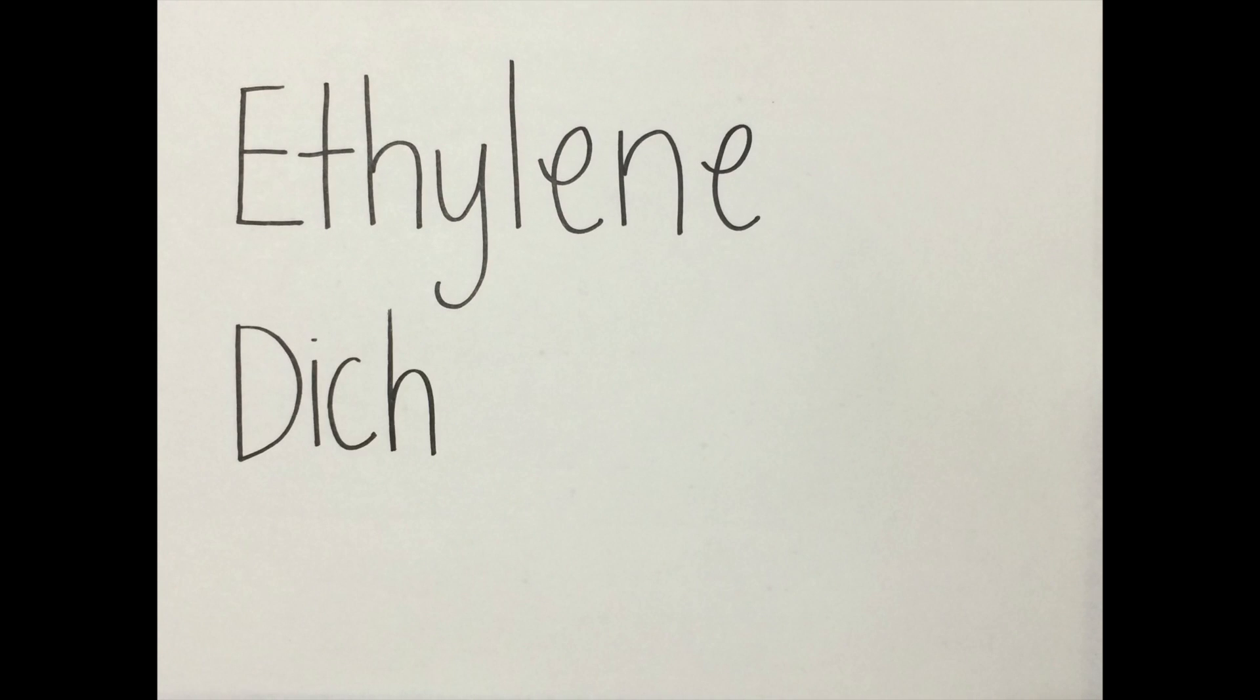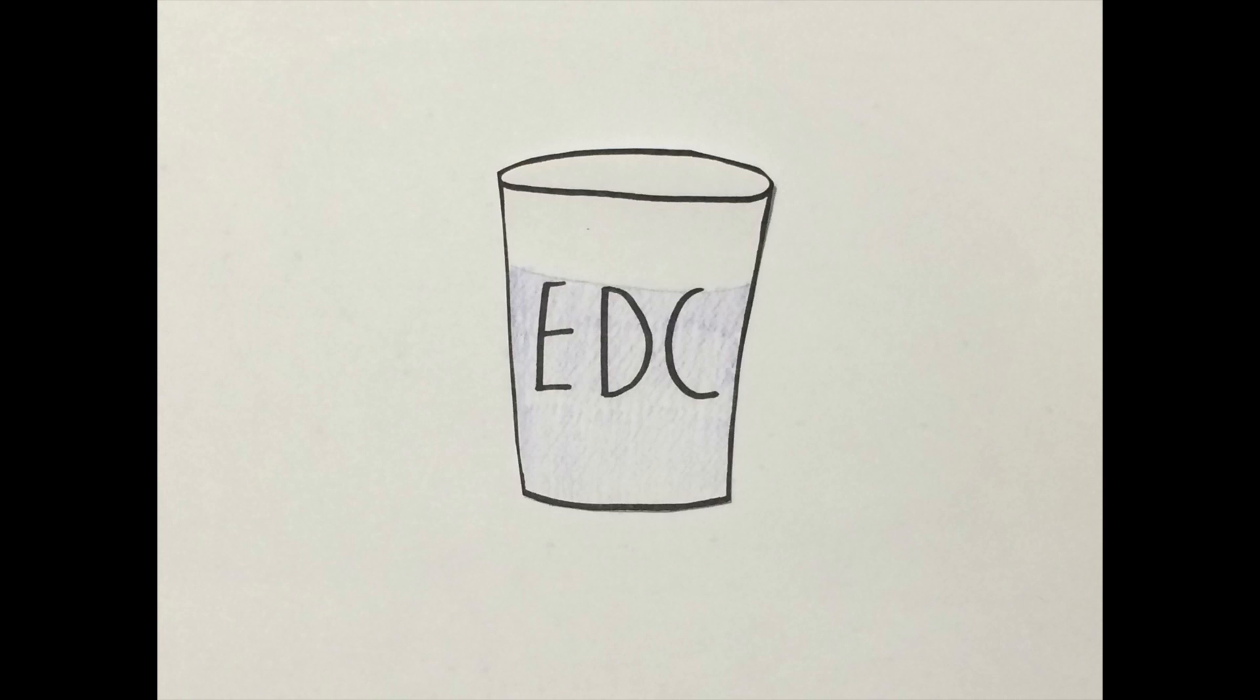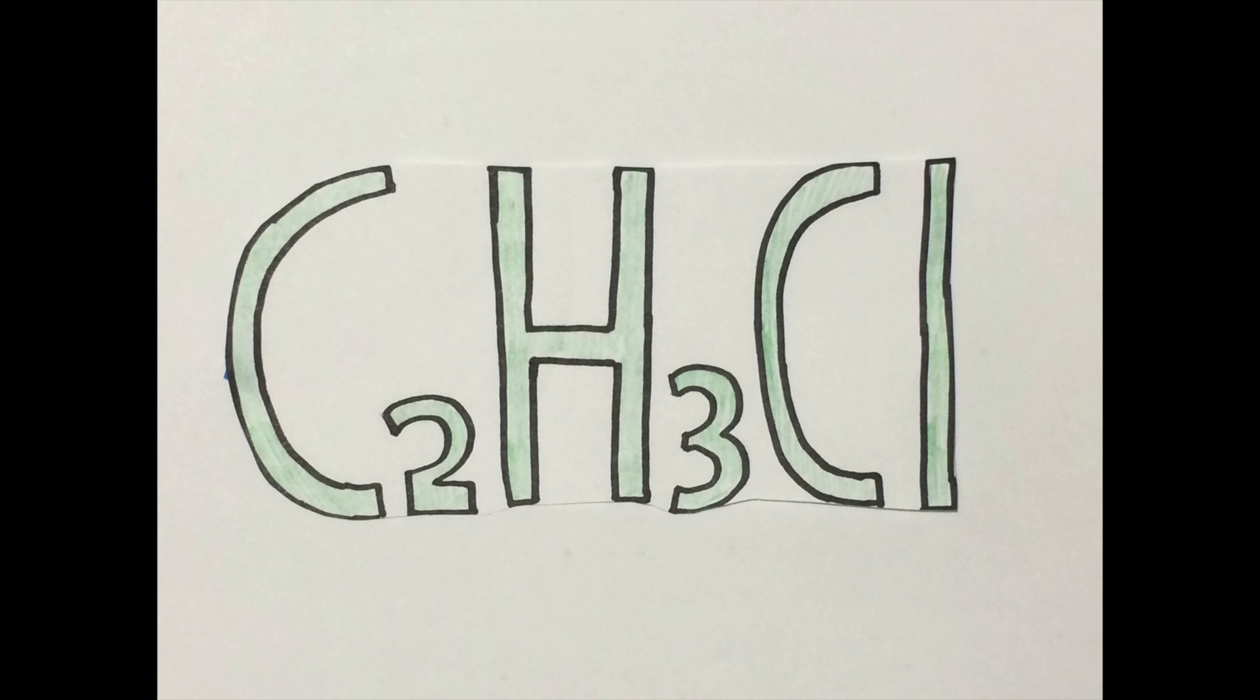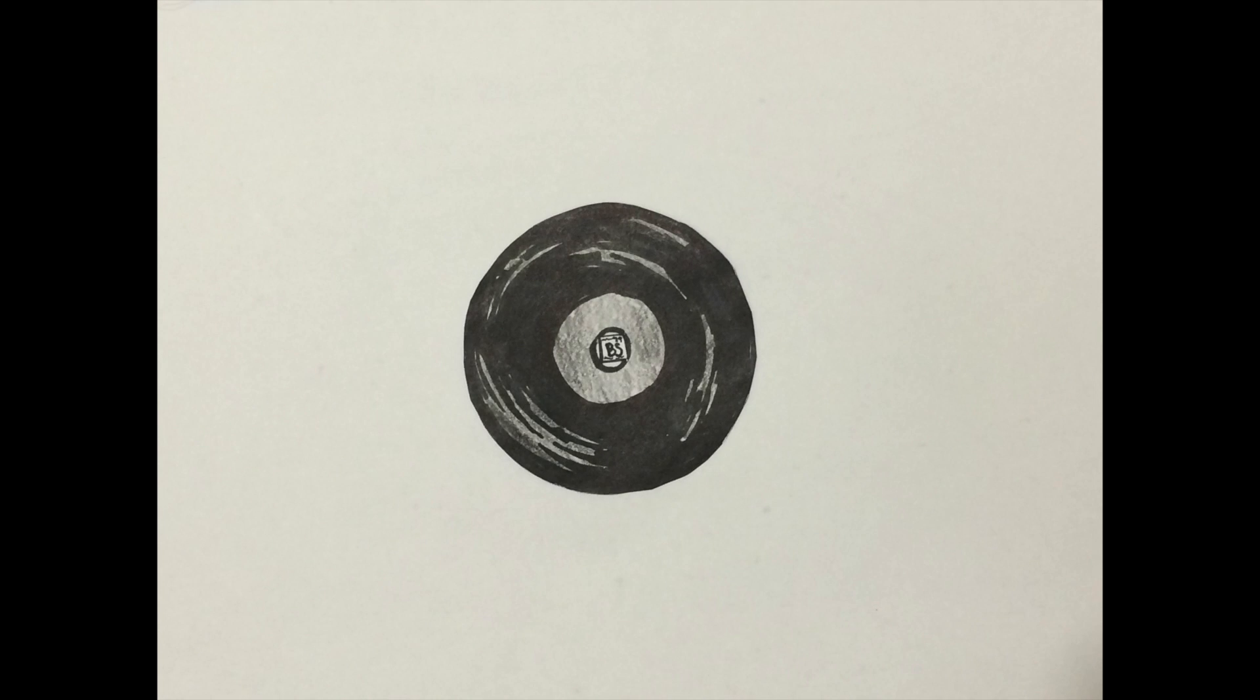a liquid called ethylene dichloride. EDC is put through a cracking process which creates the vinyl chloride monomer. The vinyl chloride monomer is then polymerized and converted into polyvinyl chloride. It can then be sent off and pressed into vinyl records.